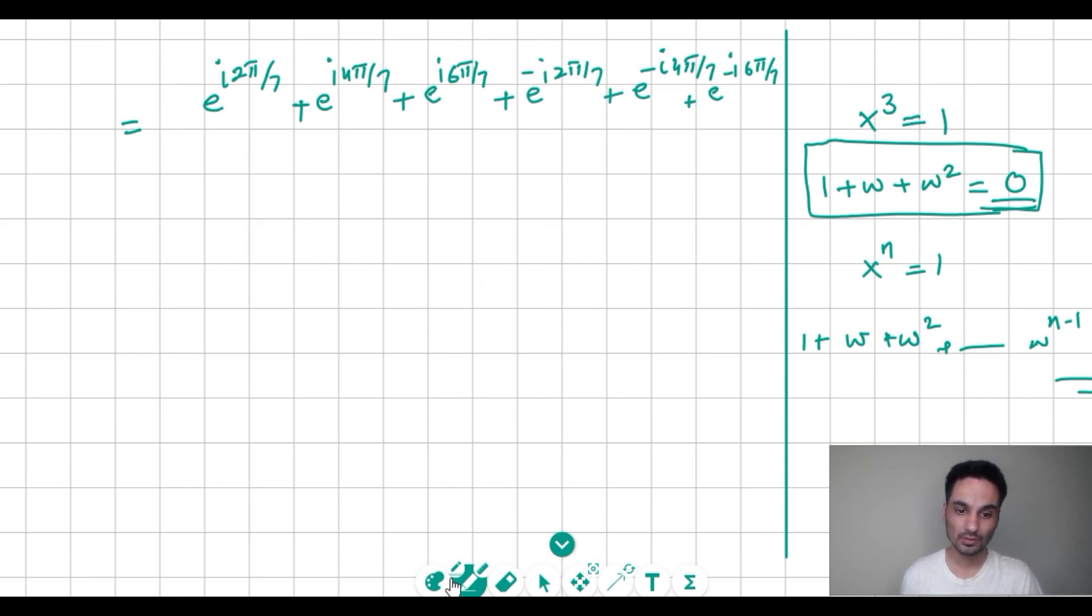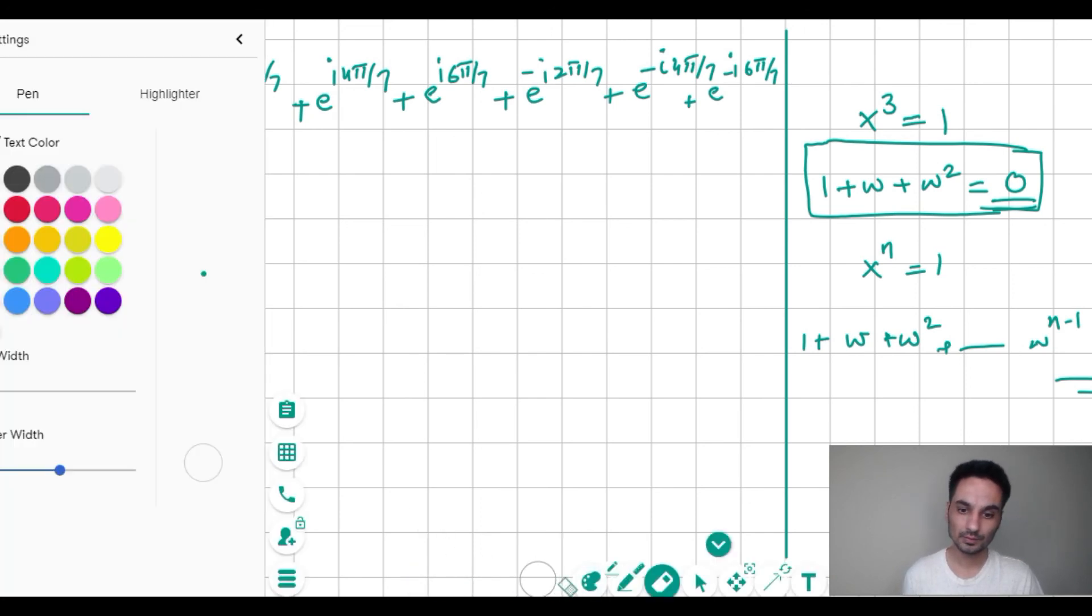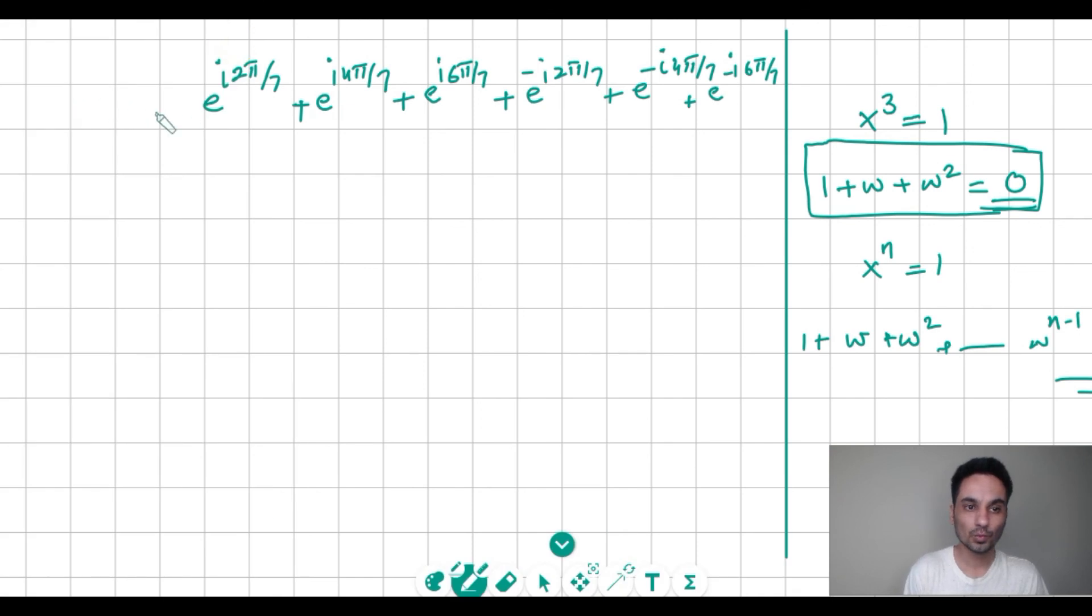But we are missing the 1, so I can add 1 and subtract 1 to it. So by adding 1 and subtracting 1, we can write this expression as (+1 - 1) and this is divided by 2.